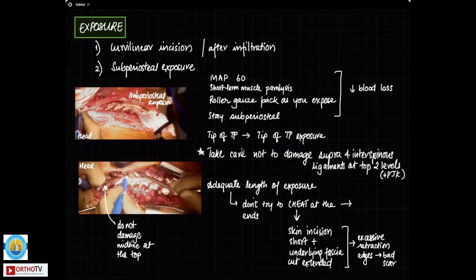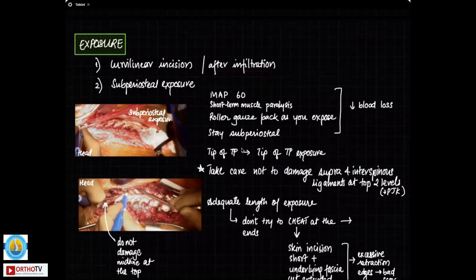After that, start with the exposure. I routinely infiltrate the skin before taking an incision. The incision is slightly curvilinear, not as much as the deformity somewhere in between. Then you do a good subperiosteal exposure. At the time of the subperiosteal exposure, the mean arterial pressures are usually 60. We ask the anesthetist to keep it a little low and you give short term muscle paralysis and that is okay during the exposure.